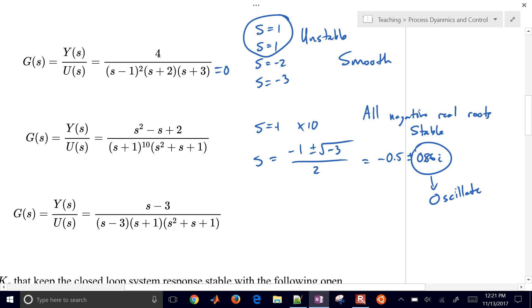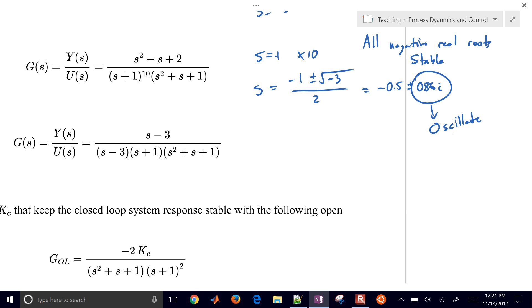And then the final one, let's go ahead and look at this one. We have a numerator that's s minus 3 as well. Those will actually cancel. So that's one thing you've got to look for in the numerator. Normally, you just don't pay attention to the numerator, but in this case,